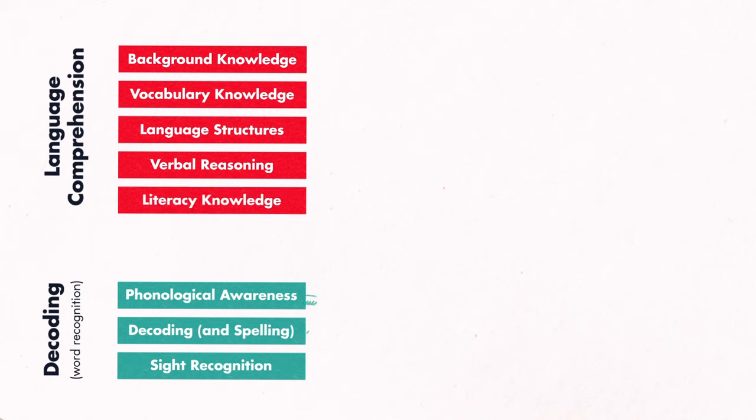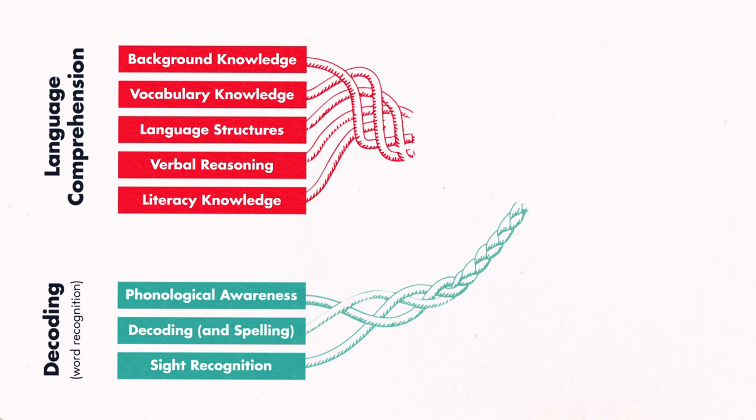Think of these subskills as strands in the reading rope that become stronger and stronger the more tightly the strands are woven together.